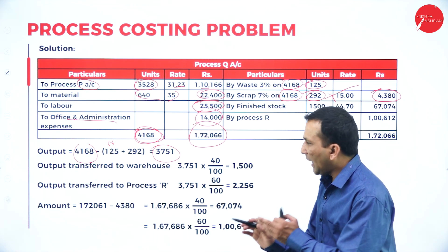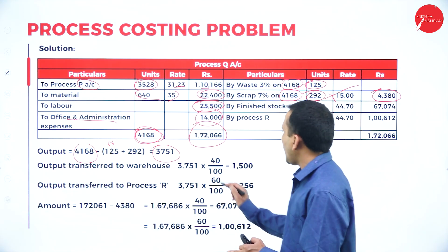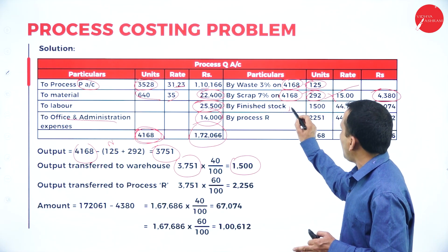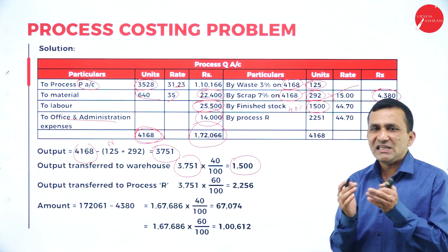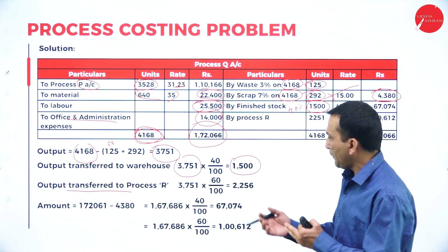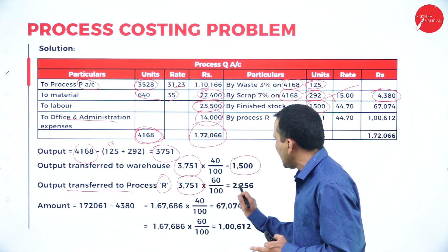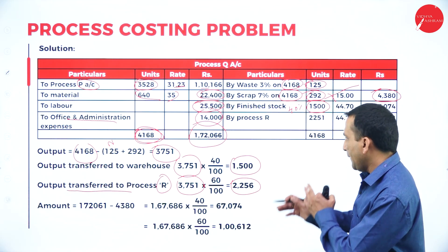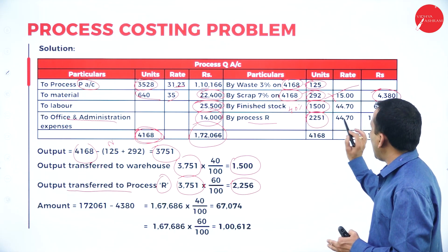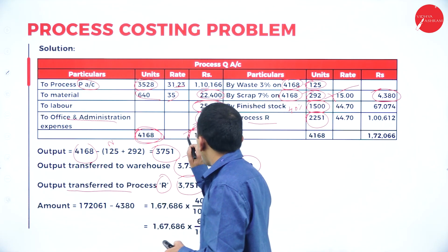From 4,168 total units, subtracting normal wastage (125) and scrap (292) gives 3,751 net output units. Of these, 40 percent goes to finished stock: 3,751 × 40% = 1,500 units. The remaining 60 percent transfers to Process R: 3,751 × 60% = 2,251 units. The total debit side value is recovered minus scrap: the difference is ₹1,67,686.